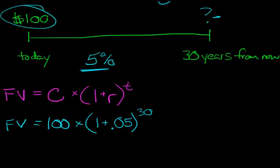So we say, okay, let's go ahead and calculate this. What is that going to give us? That's ultimately going to give us $432.19 rounded.